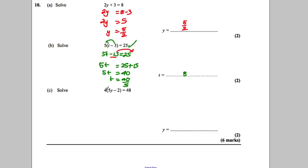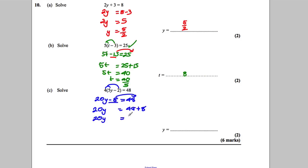This one here — multiply out first. We'd have 20Y take away 8 is equal to 48. We've got take away 8, so add 8 to both sides. 20Y would therefore be 48 add 8. 20Y would be equal to 56. Then divide by 20. Y would be 56 over 20. Now you can actually simplify 56 over 20 — 4 goes into both. Divide the top and bottom by 4. You get 14 over 5. So Y is 14 over 5.